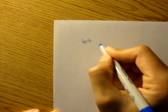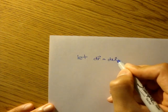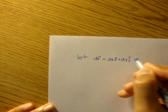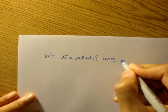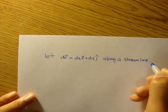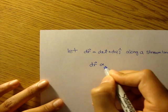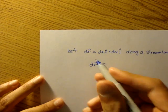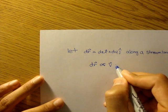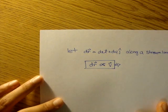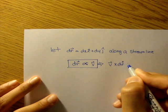Let dr, a small position function, be equal to dxi plus dyj, and let this be along a streamline. Let's also let dr be in the same direction as v, the velocity. This implies the velocity crossed with dr is going to be equal to zero.